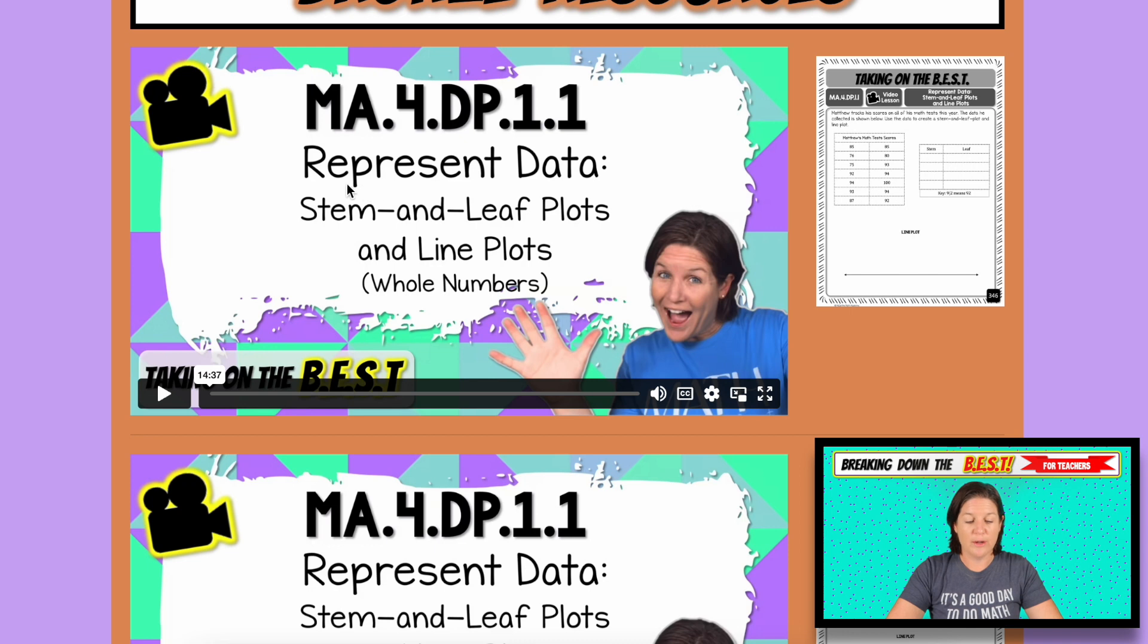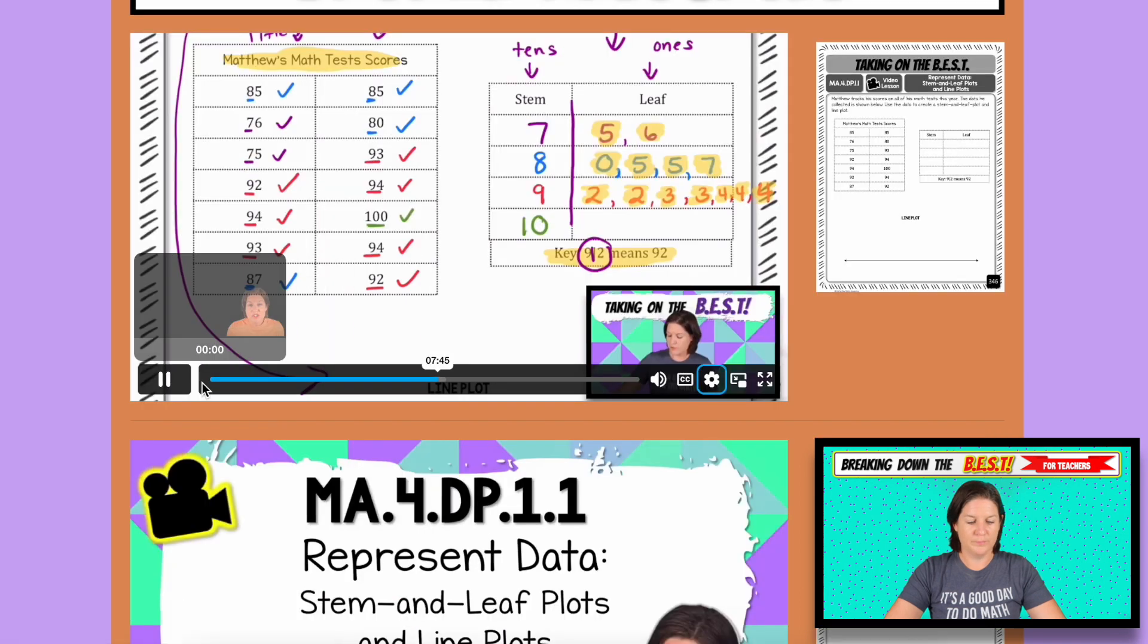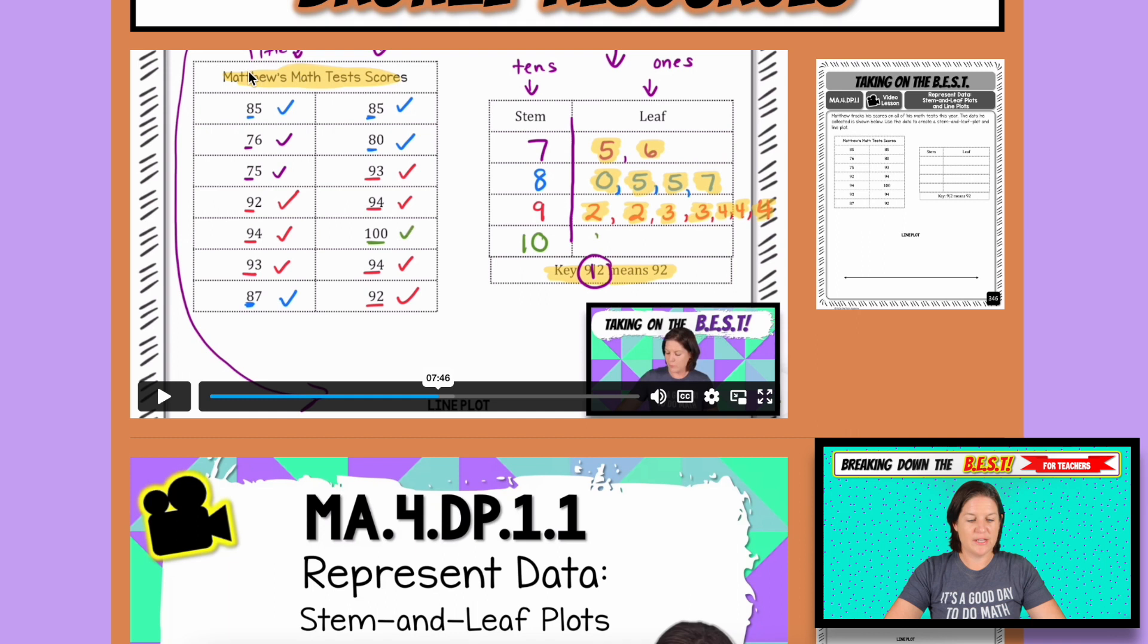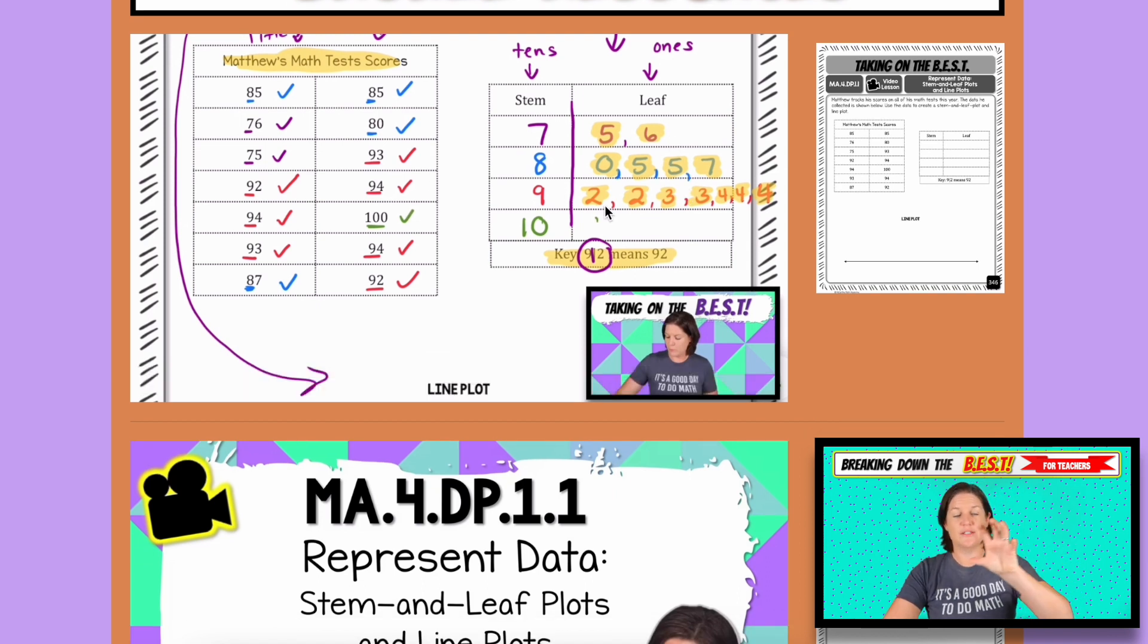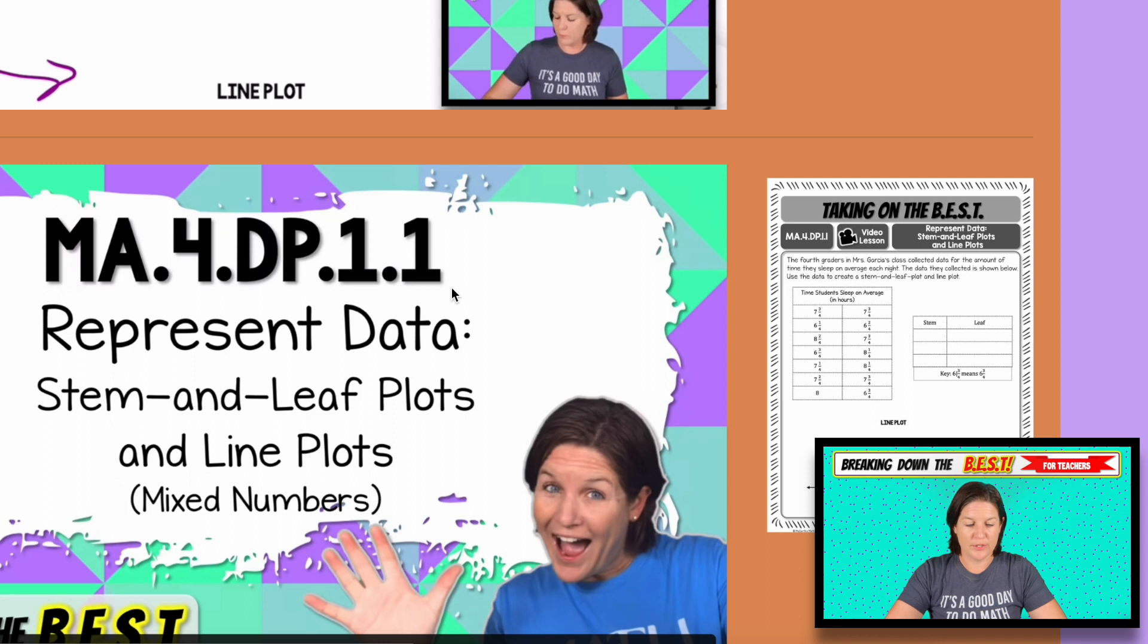So the video lessons, you can see we have two video lessons here. The first video lesson is all about representing data using stem-and-leaf plots and line plots with whole numbers. The next one contains mixed numbers and fractions. So if we take a little look, in this video you can see how we're breaking it down. We're given some test scores. We noticed that the tens place that occurs are the seven, eight, nine, and ten. Here's the key. We talk about what the key means, that right here 75 means seven and five. We put the ones place there. After we take the data from the table and put it onto the stem-and-leaf plot, then we take that same data and we put it onto a line plot. So that's really just the transfer of information from one display to another. That's the main focus of the standard.